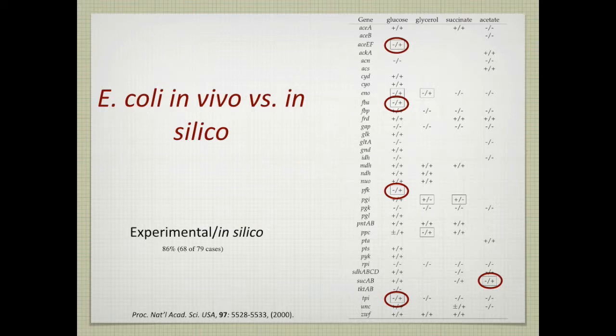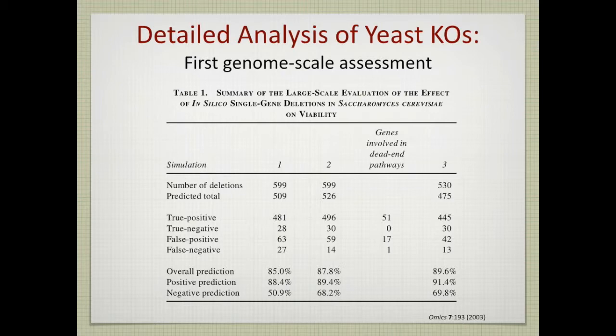All right, so that was the first set of predictions. Fortunately for yeast, there was some early on. This is in 2003. Fortunately for yeast, there were many, many knockout strains that were possible because of the genetics of yeast being easier.